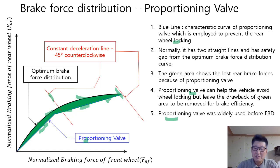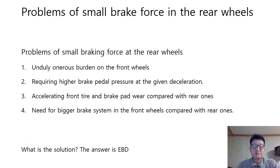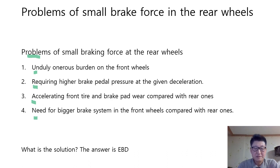Proportioning valve can help the vehicle avoid wheel locking but leaves the drawback of the green area, which reduces brake efficiency. Proportioning valve was widely used before EBD. When we use the proportioning valve, the rear brake forces are always lower than the optimum brake distribution curve. Therefore, we end up with small braking force at the rear wheels, placing an undue burden on the front wheels and requiring higher brake pedal pressure at a given deceleration. This also accelerates front tire and brake pedal wear compared with the rear ones, and requires a bigger brake system in the front wheels compared with the rear ones.